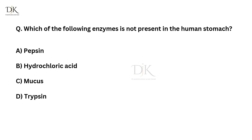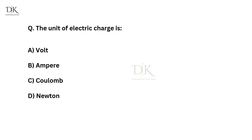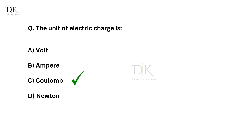Which of the following enzymes is not present in the human stomach? Correct answer is trypsin. The unit of electric charge is? Correct answer is coulomb.